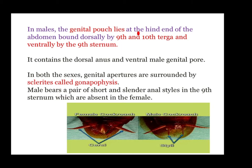In the male, the genital pouch lies at the hind end of the abdomen, bounded dorsally by the ninth and tenth terga and ventrally by the ninth sternum. It contains the dorsal anus and ventral male genital pore. In both sexes, the genital apertures are surrounded by sclerites called gonapophyses.